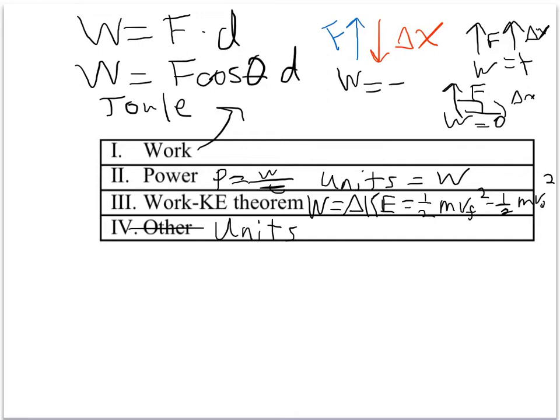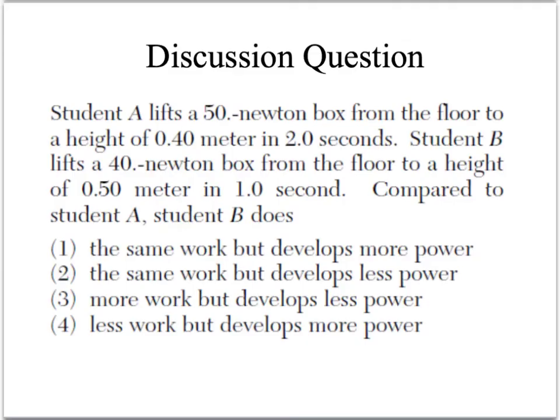I'll give you a couple of questions that are similar to the ones on the quiz. First example — you should be able to do a question like this. Student A lifts a 50-newton box from the floor to a height of 0.4 meters in two seconds. Student B lifts a 40-newton box from the floor to a height of 0.5 meters in one second. Compared to student A, student B does: the same work but develops more power; same work but less power; more work but less power; or less work but more power. We need to find the work and power from each student and compare them.